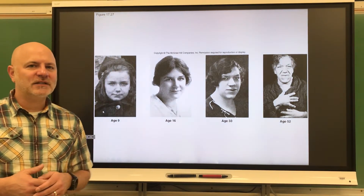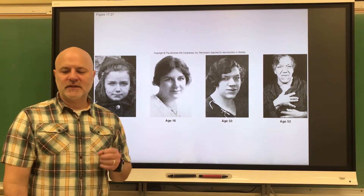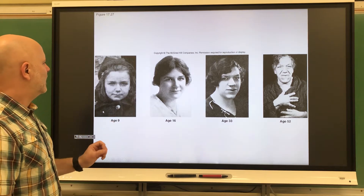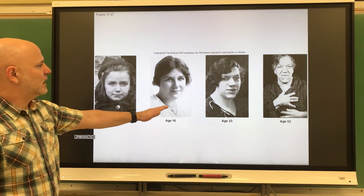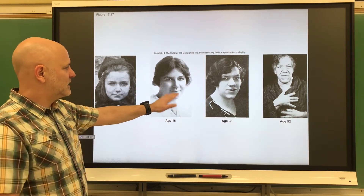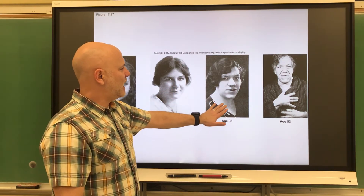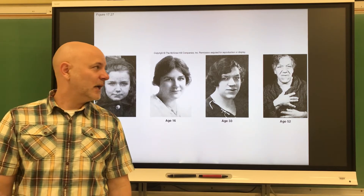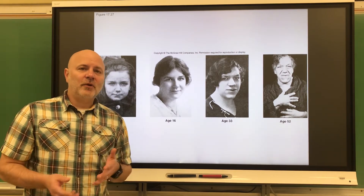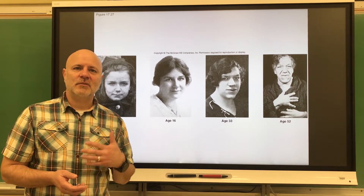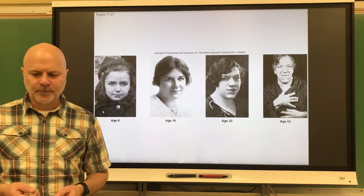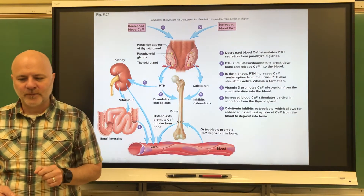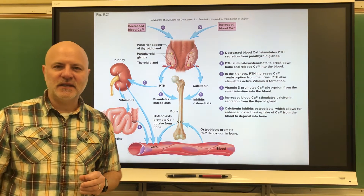Acromegaly is the secretion of excessive growth hormone in an adult — after the epiphyseal plates have already ossified. This causes enlarged hands, feet, and facial features. In the images shown, a woman has typical features as a teenager but visible enlargement by age 33 and more pronounced changes by age 52. People with pituitary gigantism often also show signs of acromegaly.